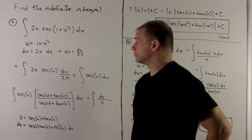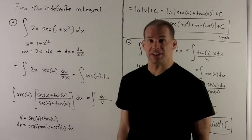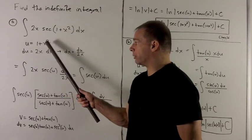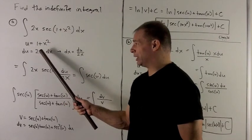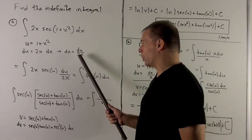To start off, I notice I have a composition, so I'm going to substitute the inside and see what happens. If u equals 1+x², du equals 2x dx. I can solve for dx to get du over 2x.